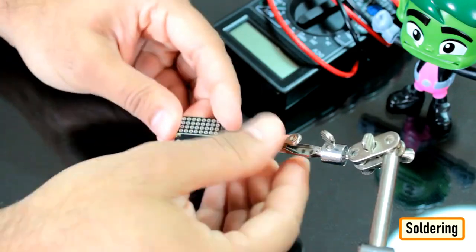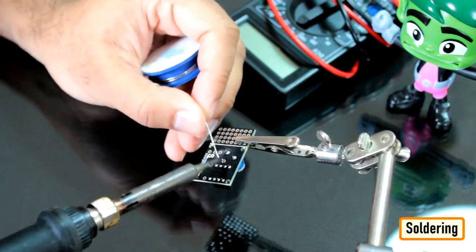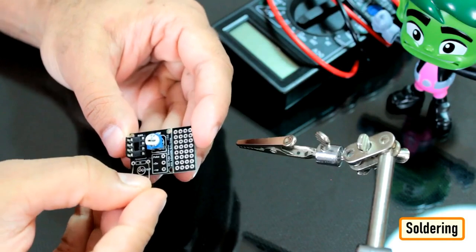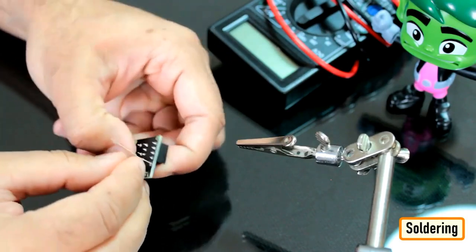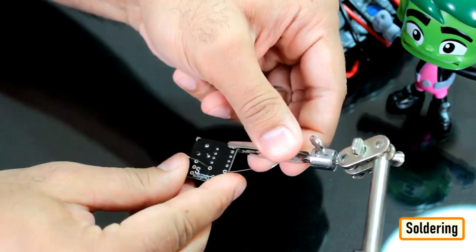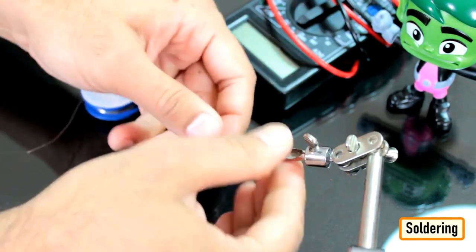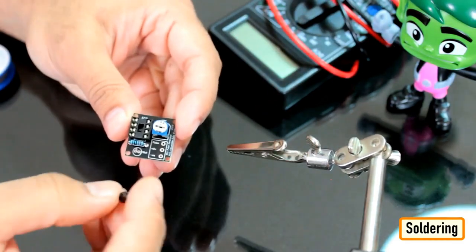Then, let's solder the potentiometer to the board. After that, let's solder the 1 kilohm resistor to the board.